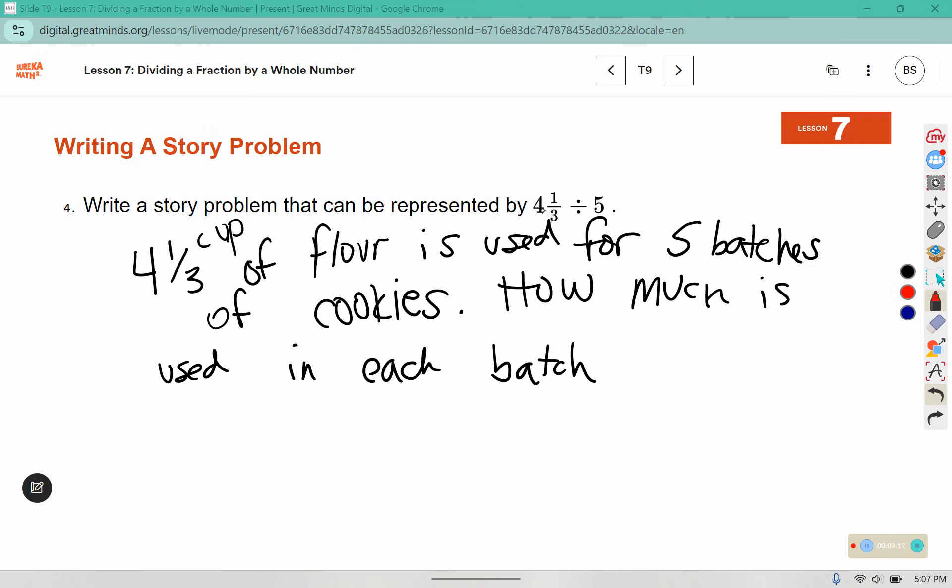4 times 3 is 12, plus 1 more makes 13. And we're splitting that up into 5 parts. So remember: leave, change, change. 13 times 1 is 13, 3 times 5 is 15. So 13/15 of a cup would be used in each batch.